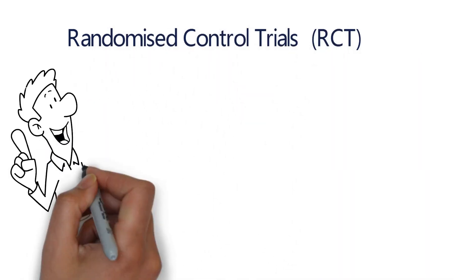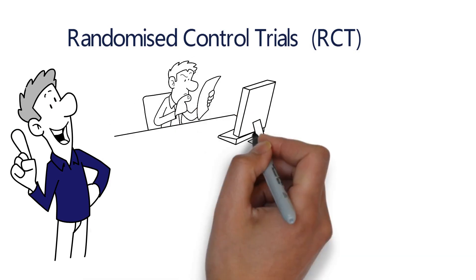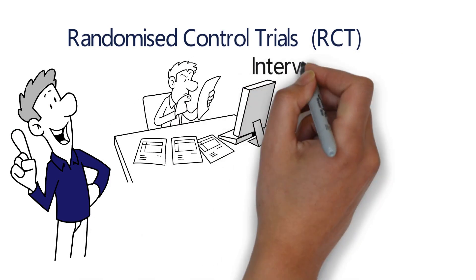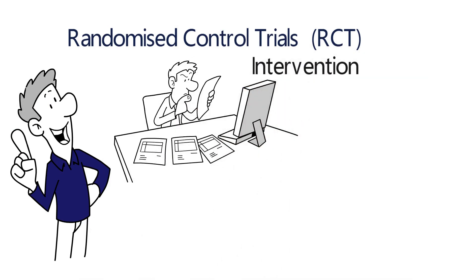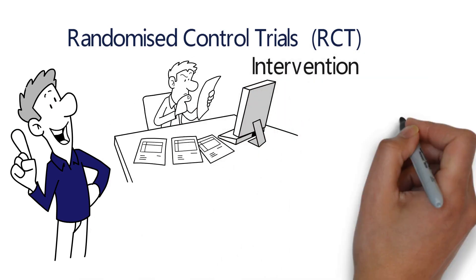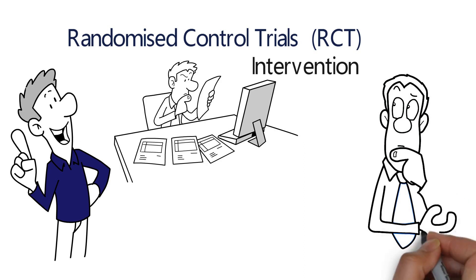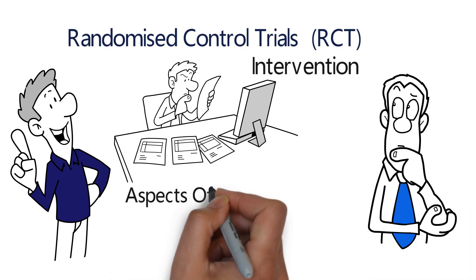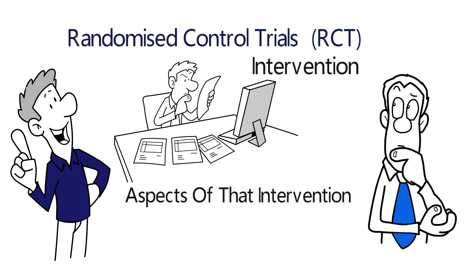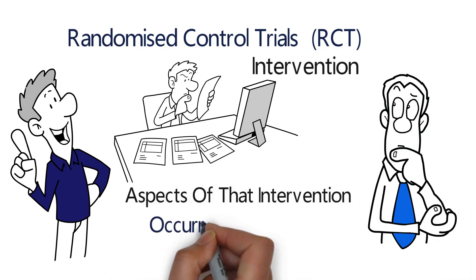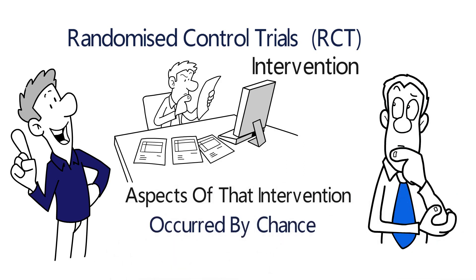Randomized control trials, often called an RCT, is a method for evaluating the effects of an intervention to determine whether changes recorded at the end of an intervention were due to aspects of that intervention or if they occurred by chance.